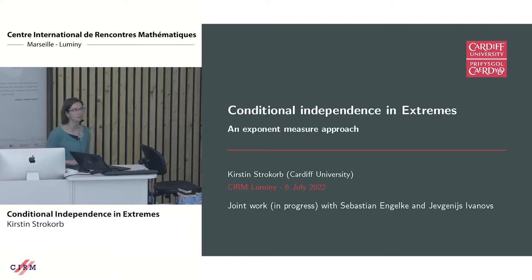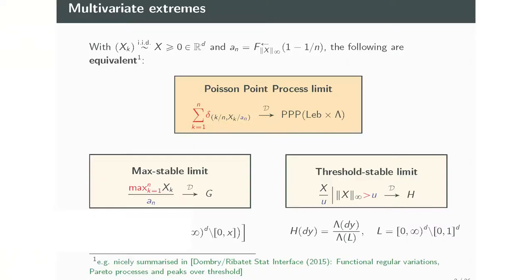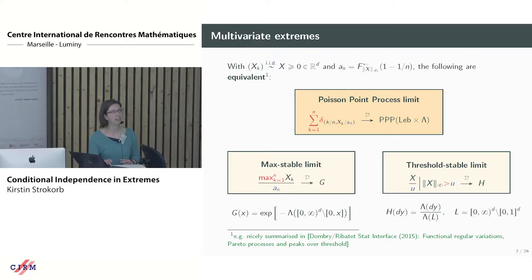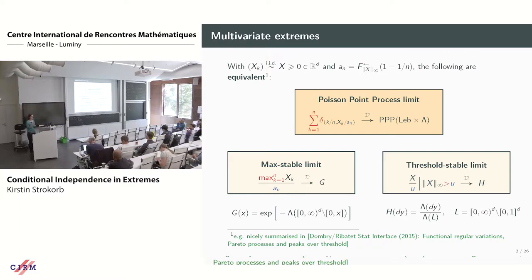Let me have a reminder about some of the things already said. In statistical practice in extremes, there's often this paradigm of either looking at block maxima or at threshold exceedances. Thomas also noted there's some mathematical elegance here, in that you can link these approaches often, at least in the IID setting. There are limit theorems telling you that when you have a max-stable limit, this is equivalent to having a threshold-stable limit.